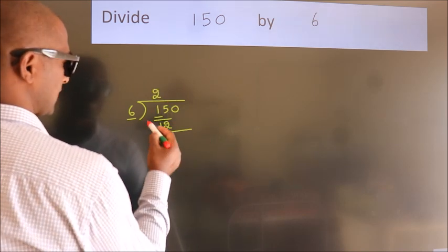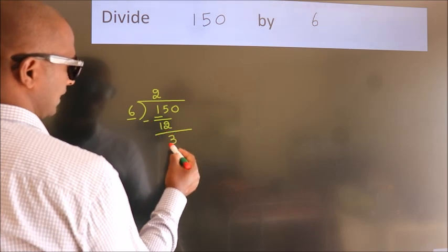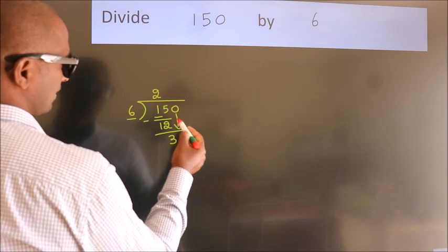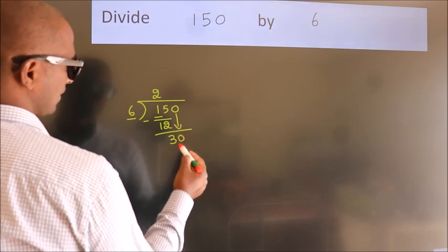Now we should subtract. We get 3. After this, bring down the beside number. So 0 down. So 30.